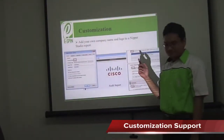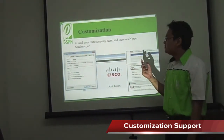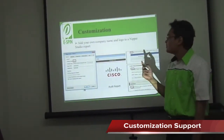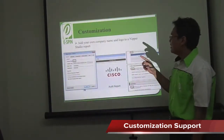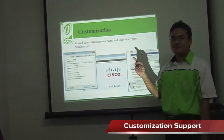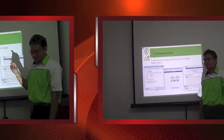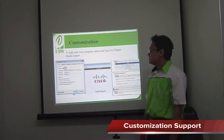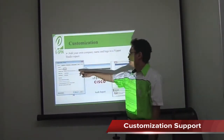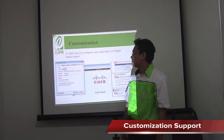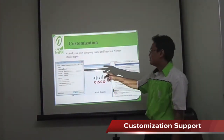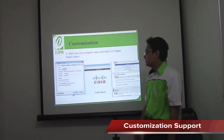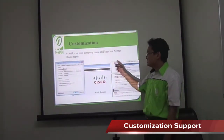For customization, NIPO Studio includes a large variety of different setting configurations. One example of a setting is adding your own company name and logo to the NIPO Studio report. As you can see on the screen, we can change the company name, create a title, and insert a logo for our report. After we apply it, the changes will automatically appear on the report.